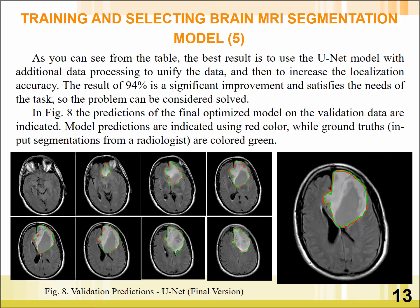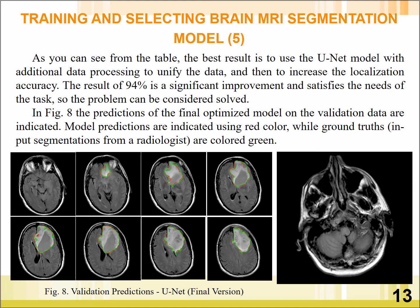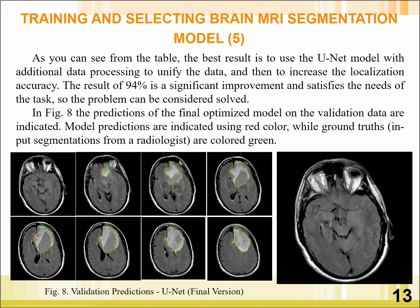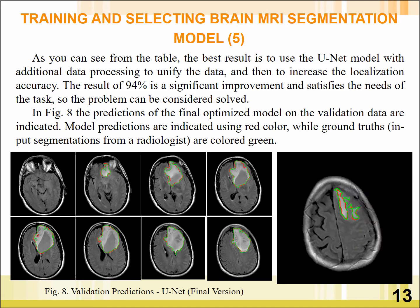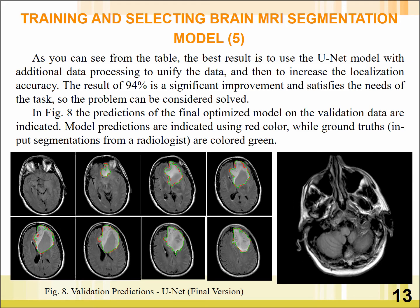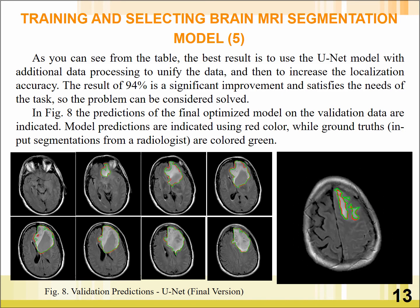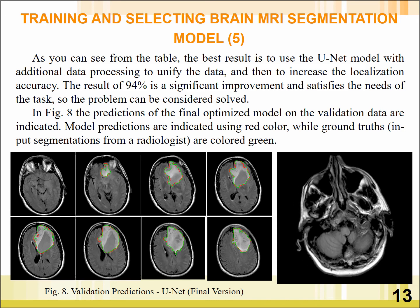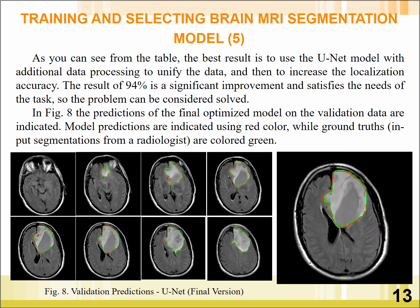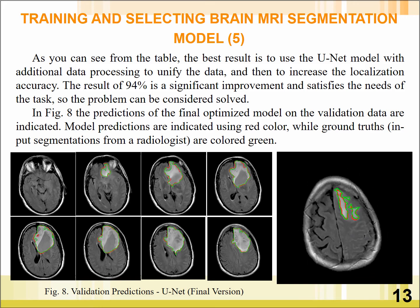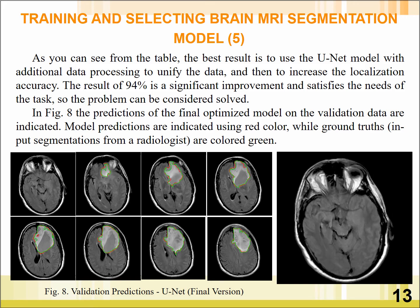In Figure 9, the predictions of the final optimized model on the validation data are shown. The model predictions are indicated using red color, while ground truths are colored green.